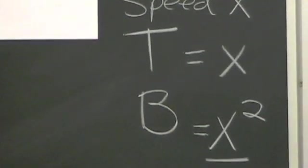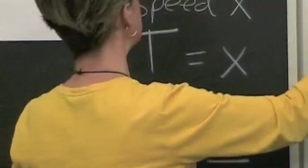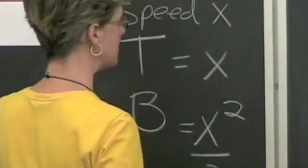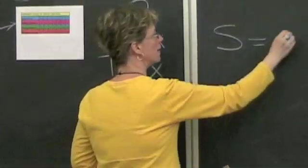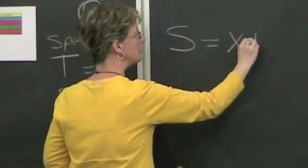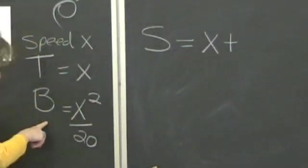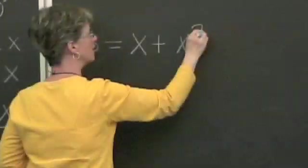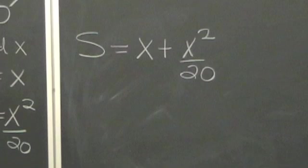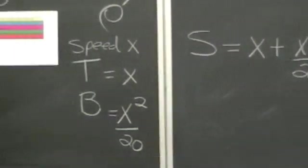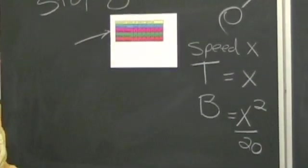So now the stopping distance, the stopping distance, we'll call that capital S, stopping distance is going to be equal to the thinking distance plus the braking distance, plus the x squared over 20. Alright, so this is how we generated these numbers in the Highway Code of Great Britain.